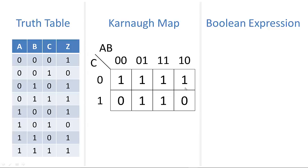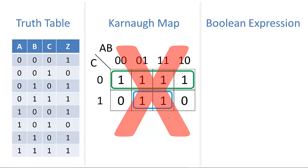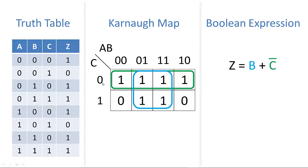Now we cluster all the ones with rectangles. You might think drawing a circle around the top four ones and another around the bottom two looks nice, but this violates the rules. What we want to do is draw the biggest circles we can. We can draw a rectangle around four ones, and it's okay for overlapping. When C is 0, the output is 1. Or when B is 1, the output is 1. So Z equals B or C naught, which means C equals 0. That's how we derive a Boolean expression using a Karnaugh map.